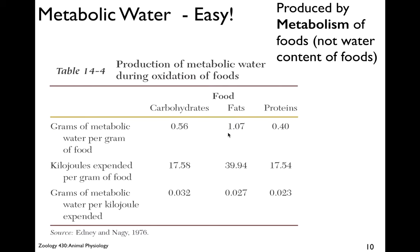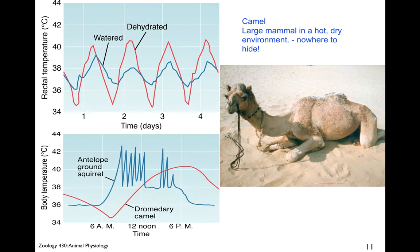It's no surprise that camels use a big fat store in their hump to store energy and survive in the desert. But how do they survive? They're really big, so they can't hide from the sun or go in a burrow, so they have a very different mechanism.